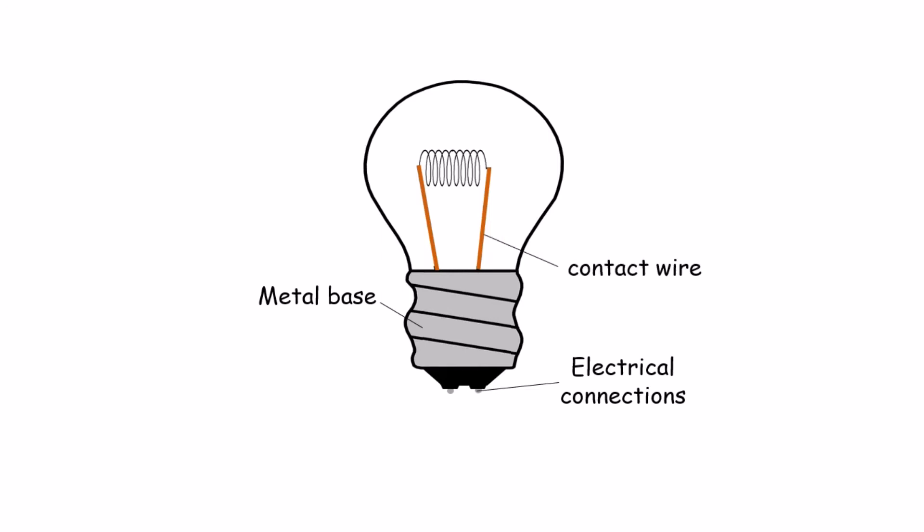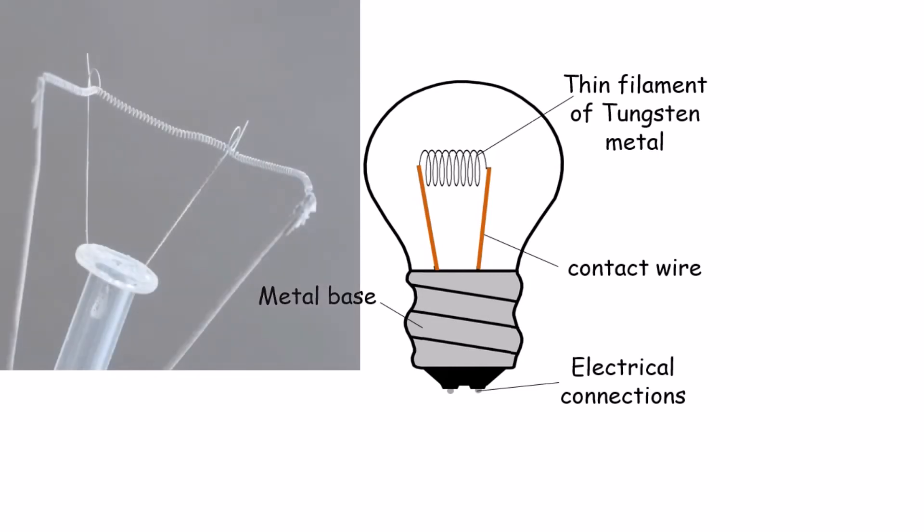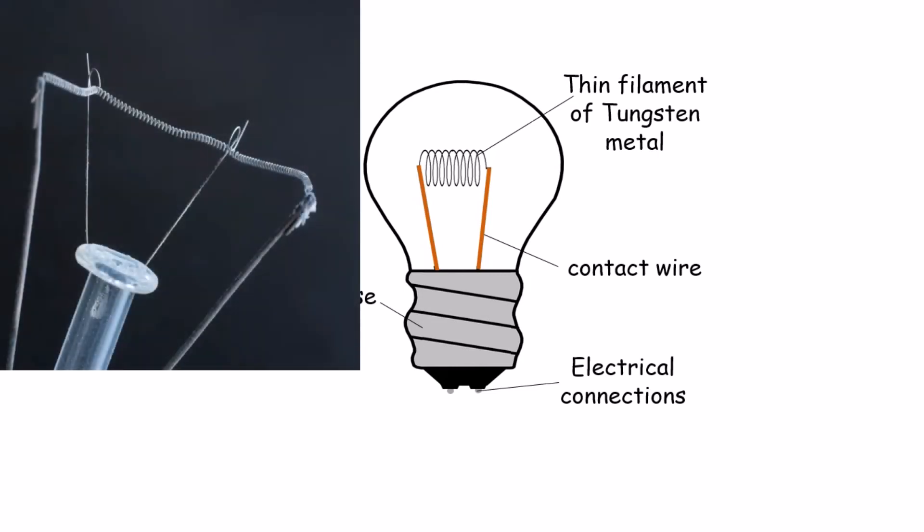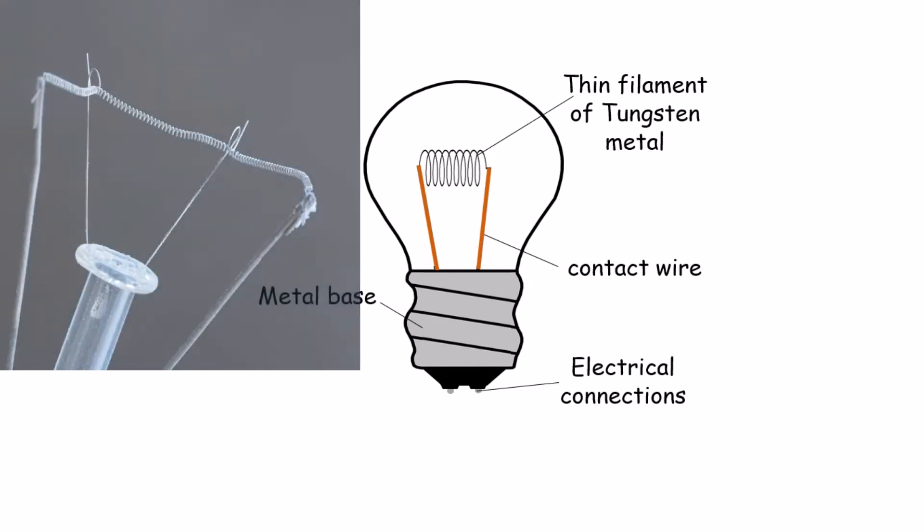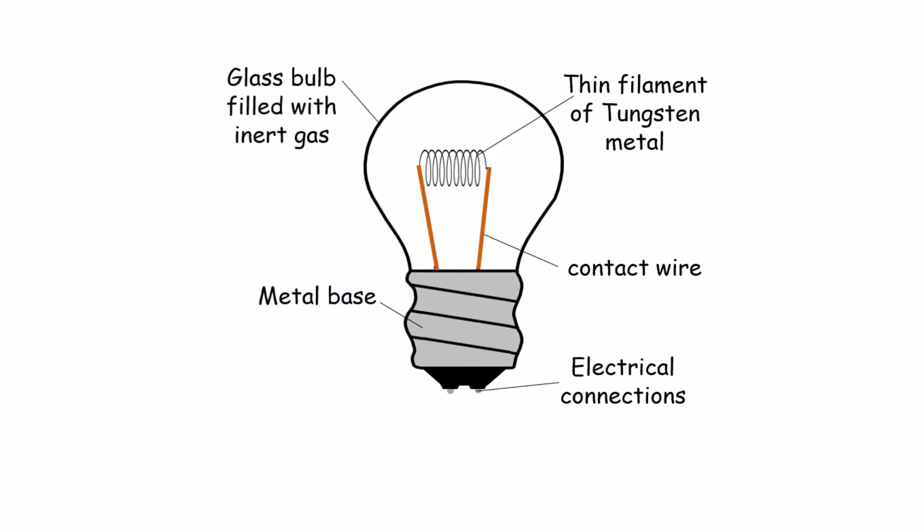The electrical connections attach to two contact wires which themselves are connected by a thin metal filament. In a typical 60-watt light bulb, the filament is made of a long thin length of tungsten metal. All of this exists within a glass bulb filled with an inert gas.